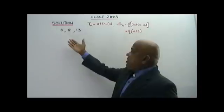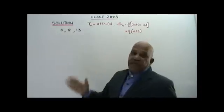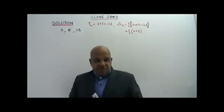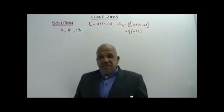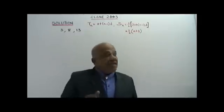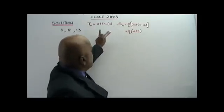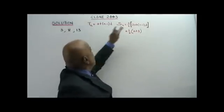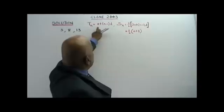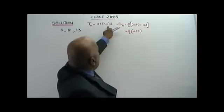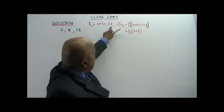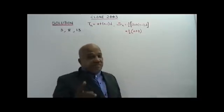Before we start solving any questions based on Arithmetic Progression, you must understand that the two main formulas are these two. The Nth term, Tn, equals A plus N minus 1 times D, where A is the first term and D is the common difference.